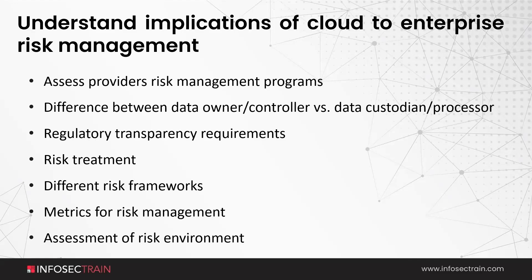There are four types of risk treatment methodologies: risk acceptance, risk avoidance, risk transfer, and risk mitigation. Mitigation means putting controls in place to reduce risk to an acceptable level. Avoidance means taking a different course of action to avoid the risk. Acceptance means the risk is within a tolerable level. Transfer means shifting the risk to a third party like a cloud service provider.